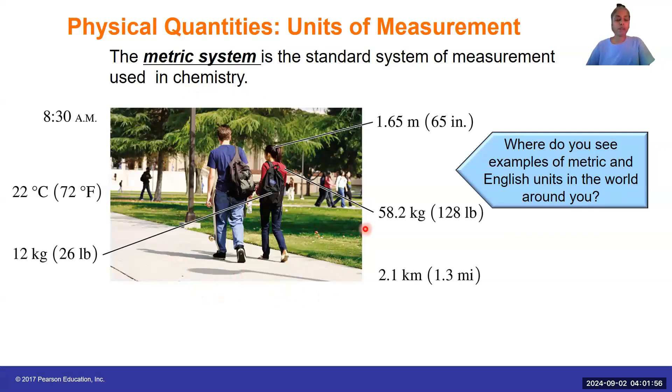Looking at this photograph here, we can see a number of different things that can be measured: the height of this person, as we see here is 1.65 meters, the weight or the mass of this person at 58.2 kilograms or 128 pounds, and the mass or weight of her bag. Where do you see examples of metric system and English units in the world around you?